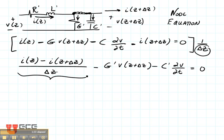Now what does this term look like? That looks like the derivative of i with respect to z, is equal to g prime v minus c prime dv dt.